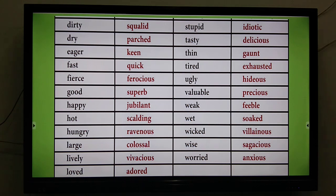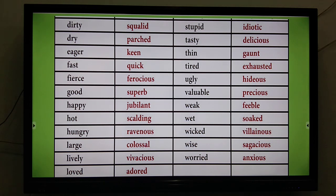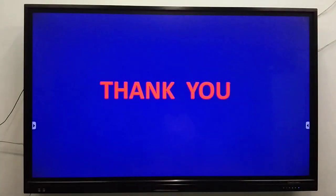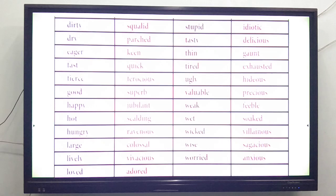Continuing: for lively, 'vivacious'; for loved, 'adored'; for stupid, 'idiotic'; for tasty, 'delicious'; for thin/skinny (especially after severe sickness), 'gaunt'; for tired, 'exhausted'; for ugly, 'hideous'; for valuable, 'precious'; for weak, 'feeble'; for wet, 'soaked' or 'drenched'; for wicked, 'villainous'; for wise, 'sagacious'; for worried, 'anxious.' In your free time, learn this list so you can use these words when writing.